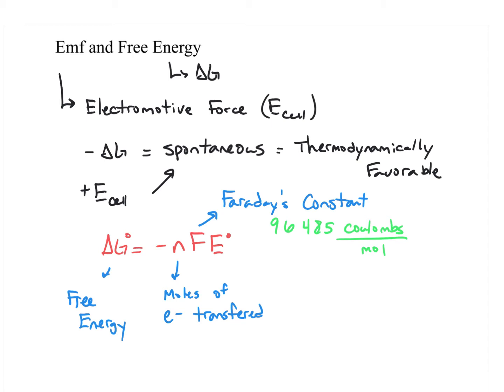If the cell potential is positive, then delta G is definitely going to be negative. If the cell potential is negative, it's a non-spontaneous situation — it's possible, but then delta G would be positive, because as we defined spontaneity, a positive delta G is non-spontaneous.